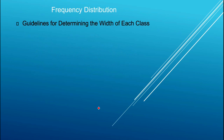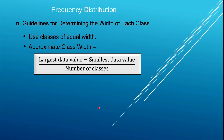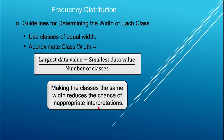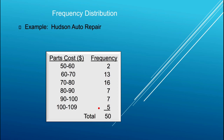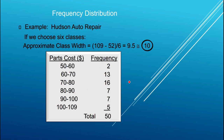The guidelines for determining class width: use equal class widths. The class width equals the largest data value minus the smallest value — that's the range — divided by the number of classes desired. Making classes the same width reduces the chance of inappropriate interpretations. Back to Hudson Auto Repair, I'm going to choose six classes, perhaps after trying three and finding it too few, and ten and finding it too many.